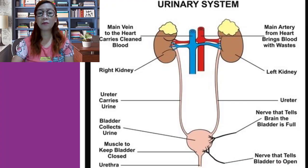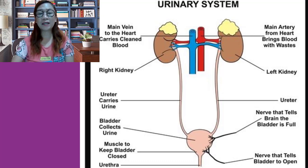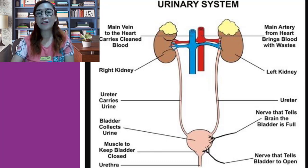The urinary system, which is also known as the renal system, produces, stores, and eliminates urine, the fluid waste excreted by the kidneys. The kidneys make urine by filtering waste and extra water from the blood. Urine travels from the kidneys through two thin tubes called ureters and fills the bladder. When the bladder is full, a person urinates through the urethra to eliminate the waste.